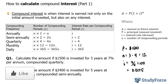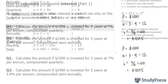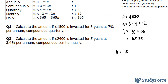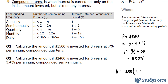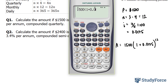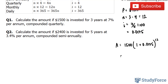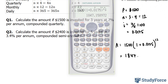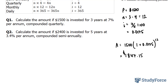We have every piece of information we need to substitute into our formula. A is equal to 1,500 times 1 plus 0.0175 to the power of 12, which gives us $1,847.15. So this is the amount of money accumulated after 3 years, starting at $1,500.